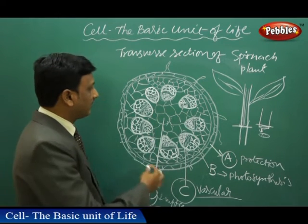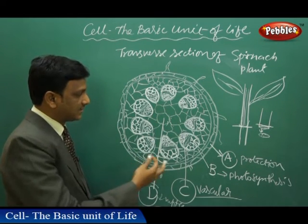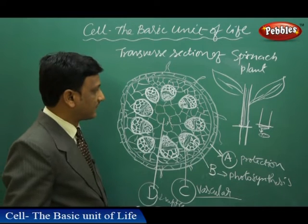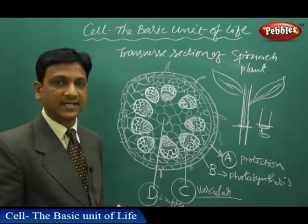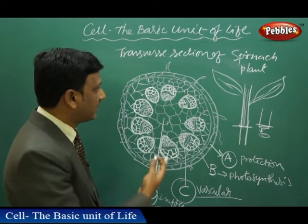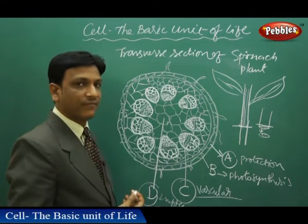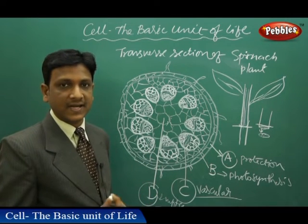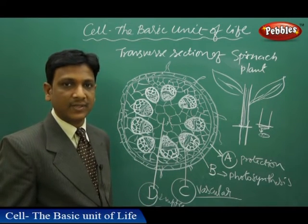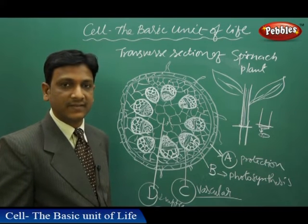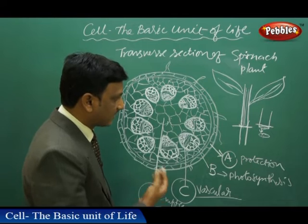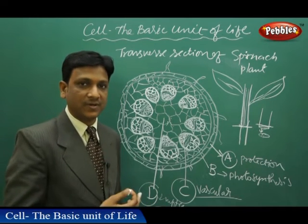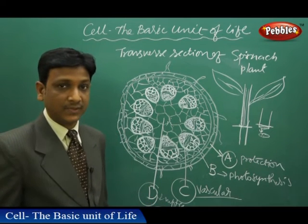Now let us see different kinds of cells and their functions. This is the variation of cells we observe in case of a plant. We have taken a cross section of a spinach plant. We can also use a Tridax — Gaddichamanti — that plant's section can also be taken with a nice blade. We can cut the thin section and it can be observed under a microscope.